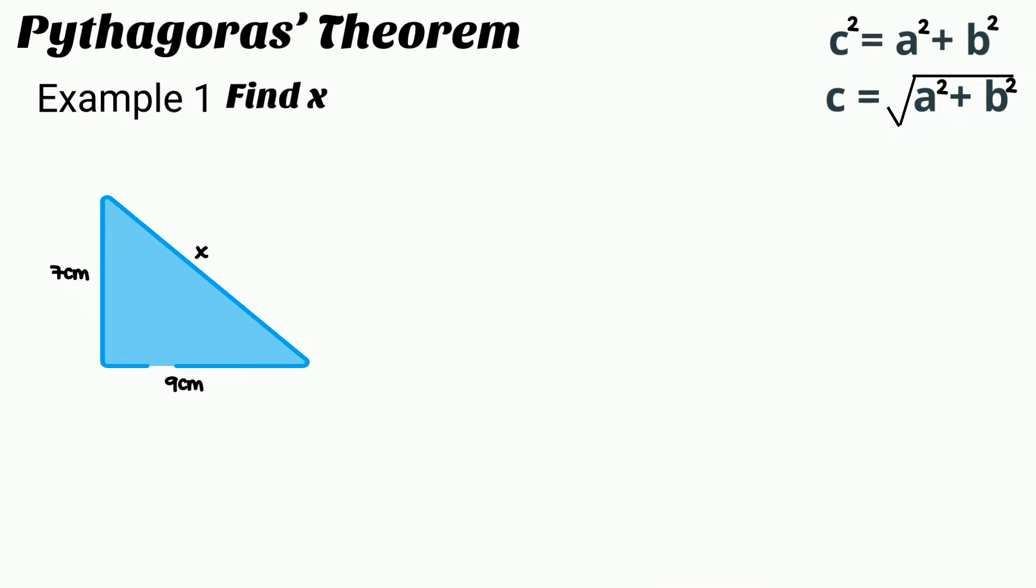In this example, the missing length is the hypotenuse, so we just have to substitute into the Pythagoras equation and then solve for x.